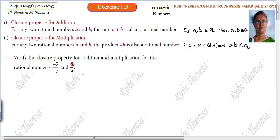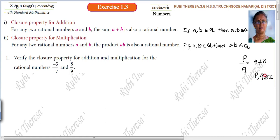They have given 2 rational numbers. You have to verify the closure property for addition and closure property for multiplication. Before doing the problem, let us recall: What is meant by closure property? For any 2 rational numbers A and B — where a rational number is in the form P by Q, where Q is not equal to 0 and P, Q belong to integers — the sum A plus B is also a rational number. This is the closure property.